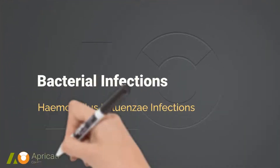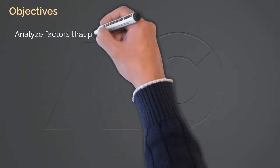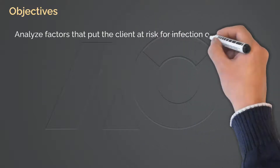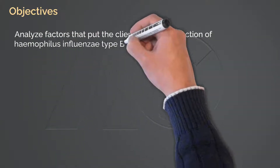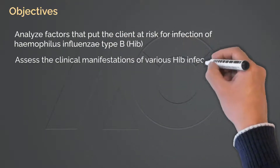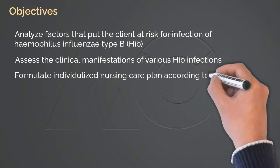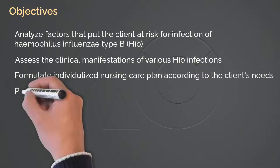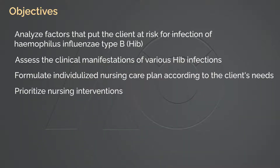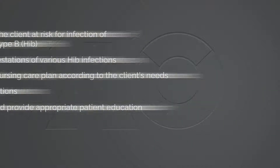Let's talk about Haemophilus Influenzae Infections. The objectives for this lecture are: analyze factors that put the client at risk for infection of Haemophilus Influenzae Type B or HIB; assess the clinical manifestations of various HIB infections; formulate an individualized nursing care plan according to the client's needs; prioritize nursing interventions; and analyze client's needs and provide appropriate patient education.